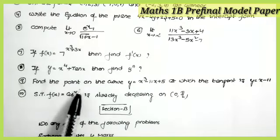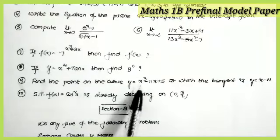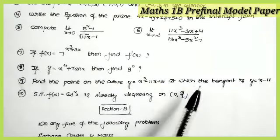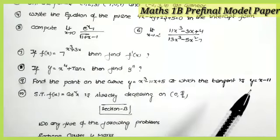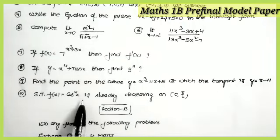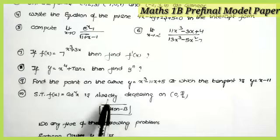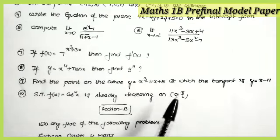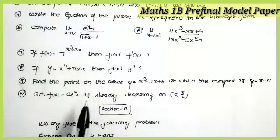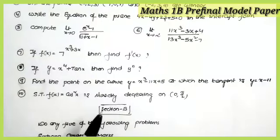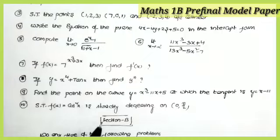The ninth question: find the point on the curve y = x³ − 11x + 5 at which the tangent is y = x − 11. The tenth question: show that f(x) = cos²x is strictly decreasing on the open interval (0, π). These two are from Applications of Derivatives. That covers all the two-mark questions.